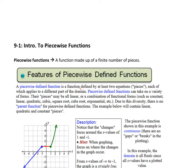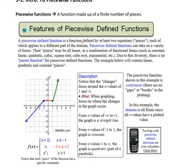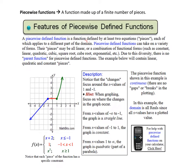Due to this diversity there is no such thing as the parent for these functions. The example below that we're going to look at will contain a linear, quadratic, and constant piece.